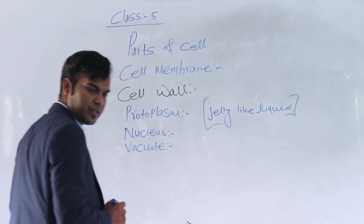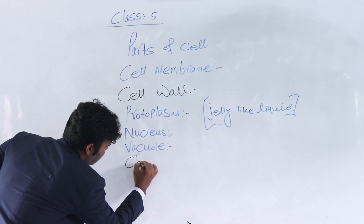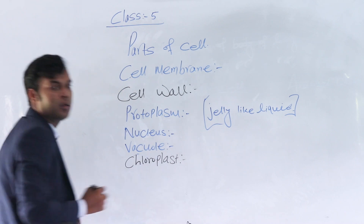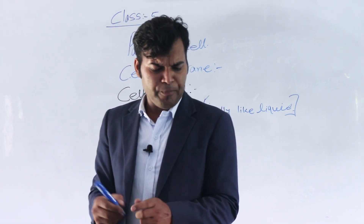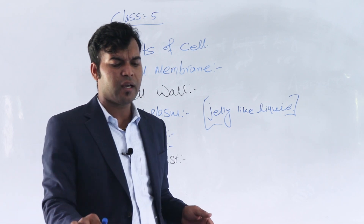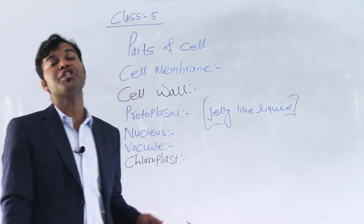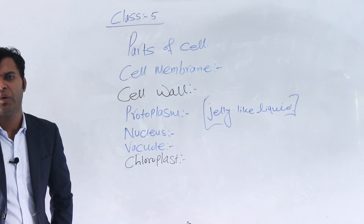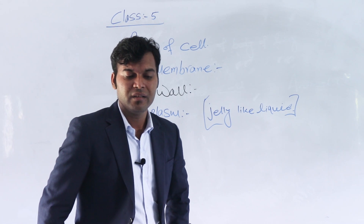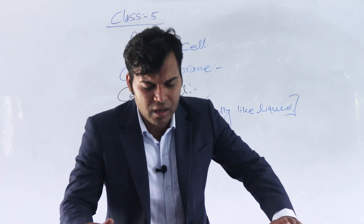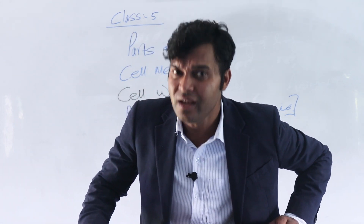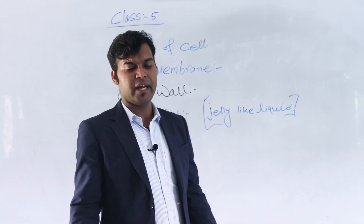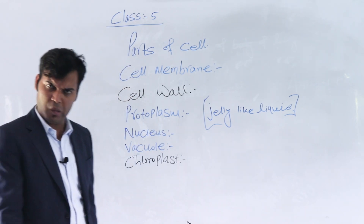Next one is chloroplast. Chloroplast is the part of a plant cell which contains a green color substance called chlorophyll. This green color substance is needed for the photosynthesis process.